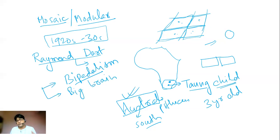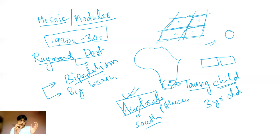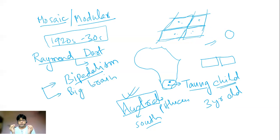The prevailing theory was that the two main features of human evolution — bipedalism and a bigger brain — must develop together. So any fossil claiming to be human must show both. The Taung Child's skull was too small even for a human child, so scholars concluded it could not be human, even if bipedal. Raymond Dart's theory was therefore rejected.